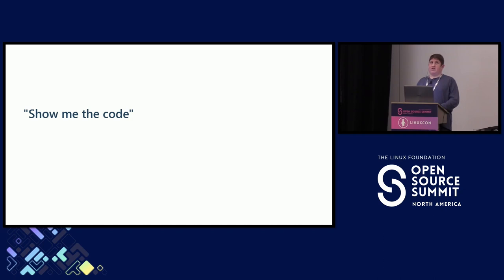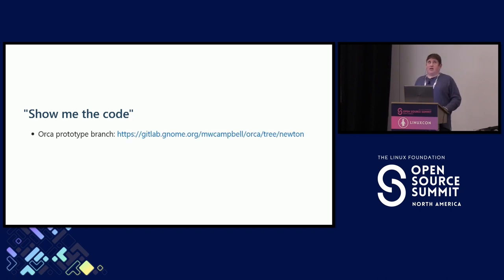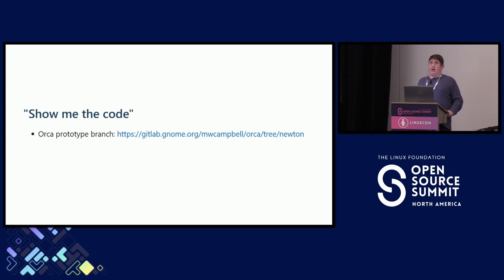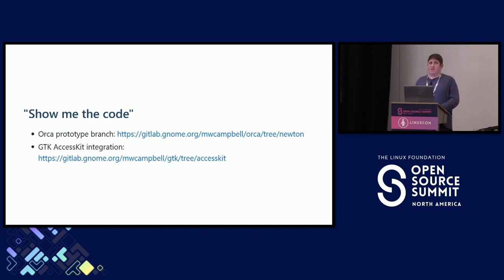Some of you might be thinking, show me the code. I won't link to all the Git repositories here, but I'll give a couple of entry points. The best way to start exploring the whole stack, build it, and test it out is using my branch of the ORCA screen reader, which I've linked to here. The readme in that branch includes instructions for setting up everything and testing what we've got so far. I'll also provide a link to my branch of GTK where I'm currently working on integrating Access Kit.